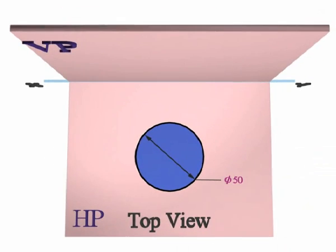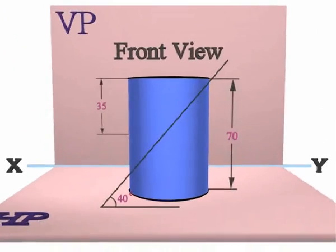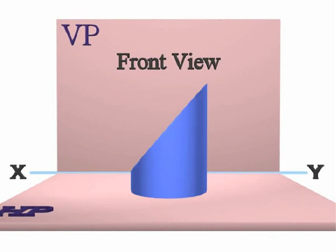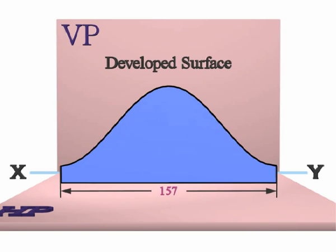The cylinder is resting on the horizontal plane vertically. The cutting plane is perpendicular to the VP, inclined at 40 degrees to the HP, and bisecting the axis of the cylinder.